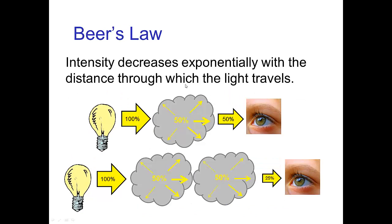There's a principle called Beer's Law which says that the intensity of transmitted light decreases exponentially with the distance through which the light travels. So if light passes through a cloud with 50% extinction, then passing through twice as much cloud reduces it by 50% in the first cloud, then that gets reduced by another 50% in the second cloud — the resulting light is only 25% of the original intensity. It gets cut in half, and then cut in half again.